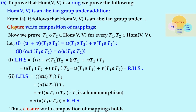To prove that Hom(V,V) is a ring, we prove it is an abelian group under addition — that follows from the previous subdivision, so the five axioms are already true. We concentrate only on closure, associativity, and the distributive laws. For closure with respect to composition of mappings, we need that for every T1, T2 in Hom(V,V), T1 composed with T2 is also in Hom(V,V). The image of u+v under T1∘T2 equals the image of u under T1∘T2 plus the image of v under T1∘T2, using the definition of composition and the fact that T1 is a homomorphism.